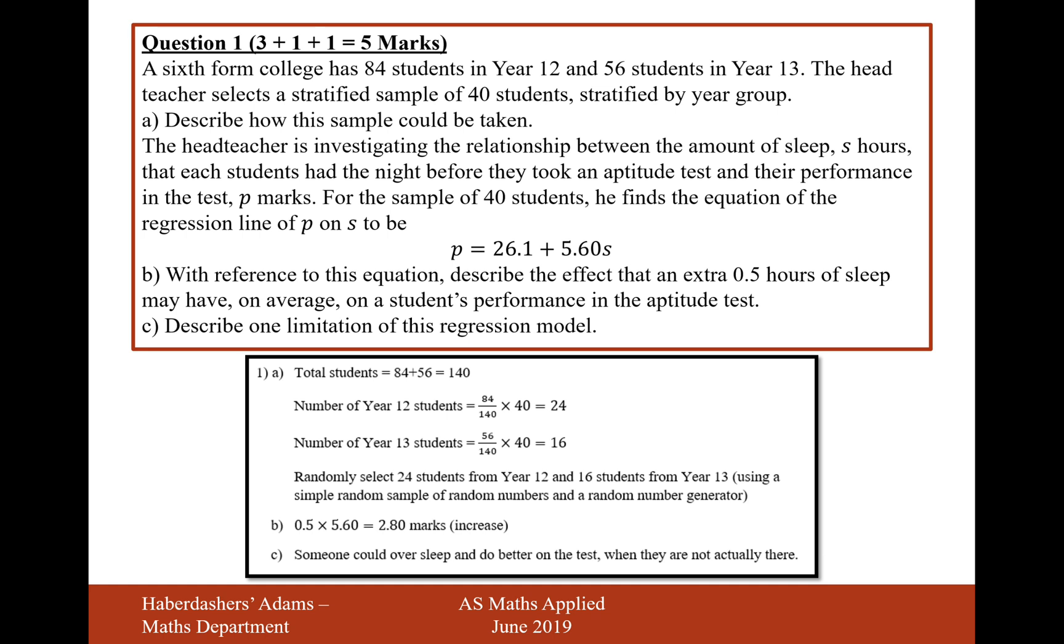With reference to this equation, describe the effect that an extra 0.5 hours of sleep may have on average on a student's performance in the aptitude test. So the answer to this would be just to put 0.5 in.